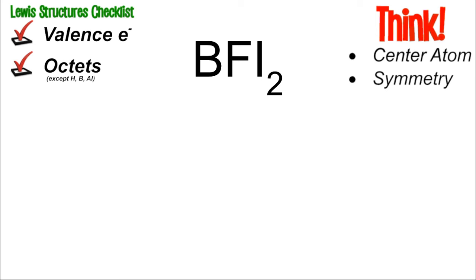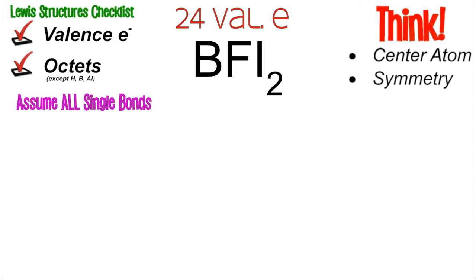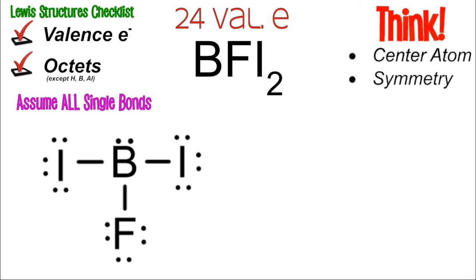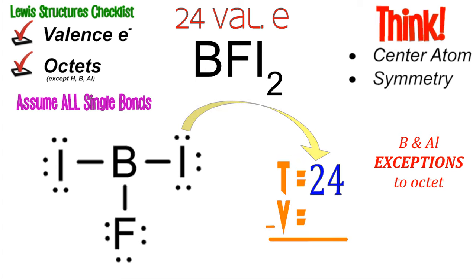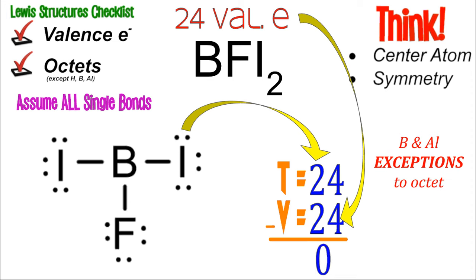BFI2: boron is 3, F is 7, and two I's are both 7, giving 24 valence electrons. Assume all single bonds with boron in the middle. Boron and aluminum are exceptions — they can only bond three times, so there are no lone pairs on boron. Each outer atom has eight electrons, so eight times three is 24. We're supposed to have 24, so the difference is zero. This is a completed and correct Lewis structure.